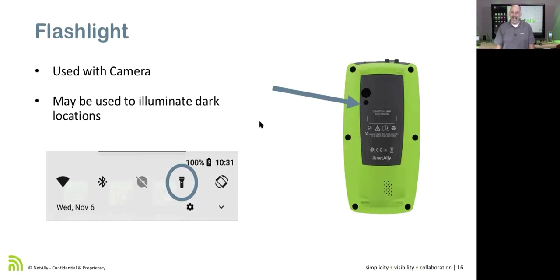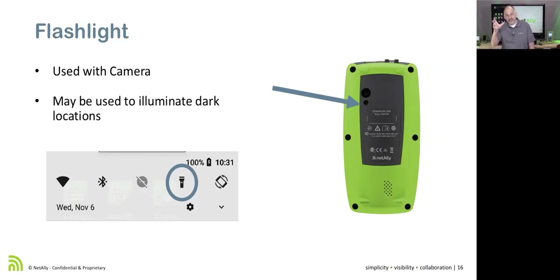There's a flashlight on the device. Swipe down and click the flashlight to turn it on. It can be used with the camera or to illuminate a dark area — useful when you're looking behind a desk or trying to see where something is connected.